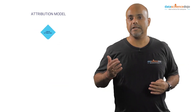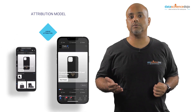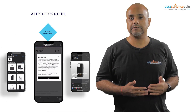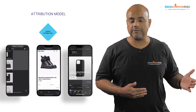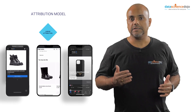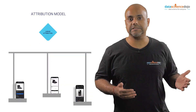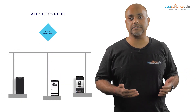Linear attribution assigns an equal amount of credit to each touch point. In the above example, the social media post, display ad, and PPC all get equal credit for the conversion.